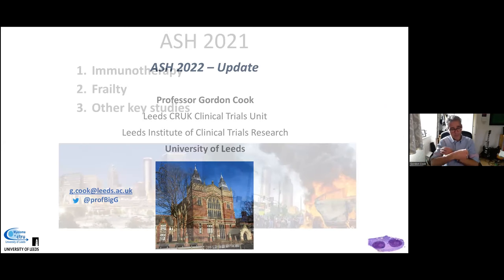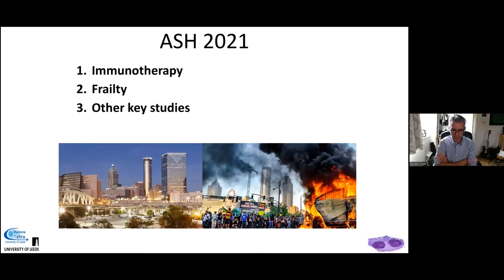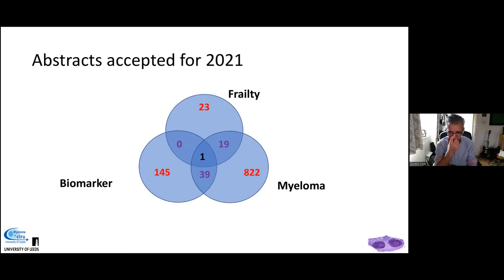ASH 2021 was held virtually rather than physically in Atlanta, Georgia, but was nonetheless a full program meeting. Gordon will cover three areas: immunotherapy, frailty, and a couple of key other studies. There were over 850 abstracts relating to myeloma, the vast majority related to treatment — clinical trial design or real-world reviews.